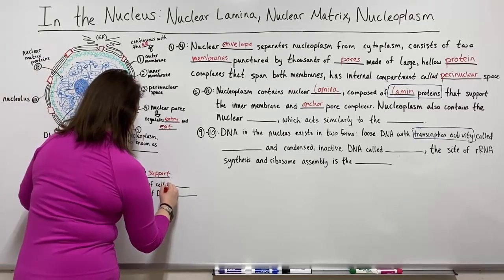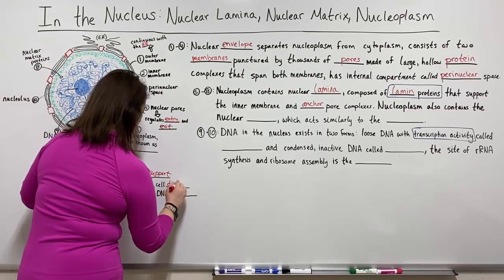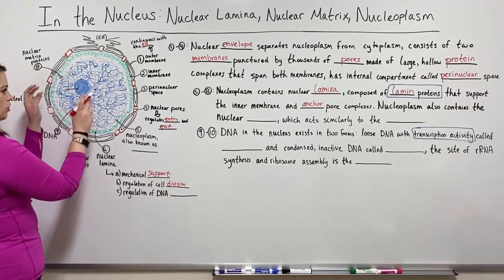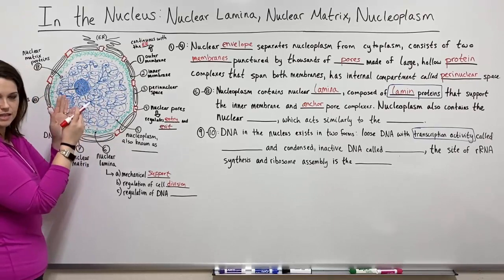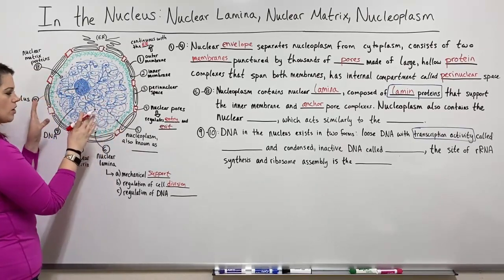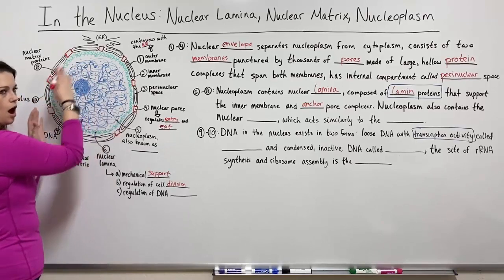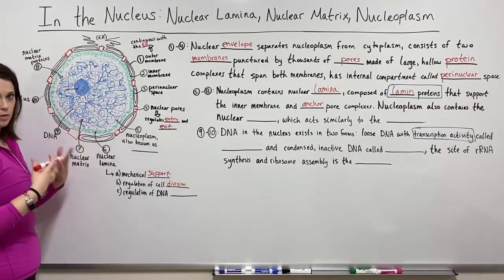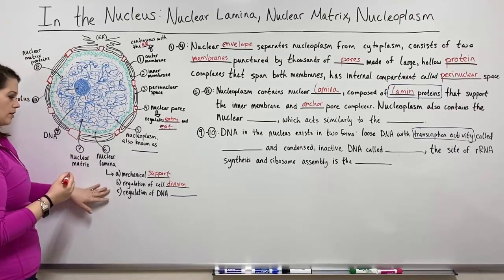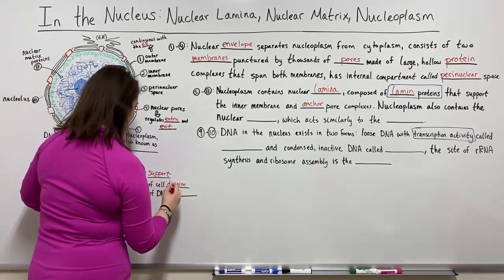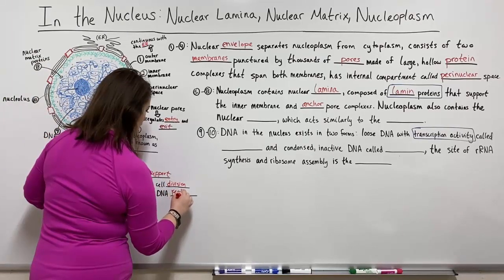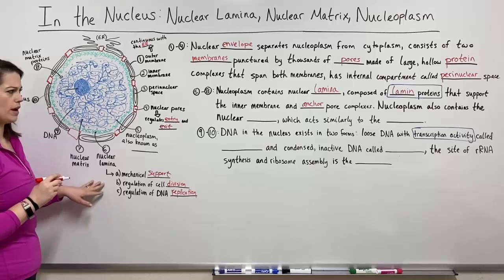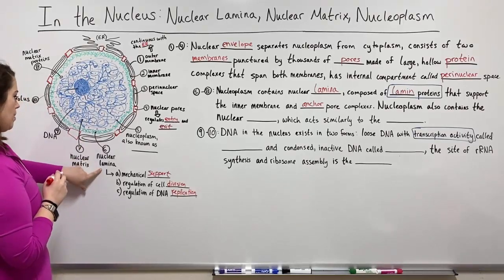The nuclear lamina helps to regulate cell division. During mitosis, the chromatin condenses into chromosomes, they have to be separated, and the nuclear envelope has to dissolve for that to happen and then reform later — the nuclear lamina helps with that process. The nuclear lamina also regulates DNA replication. So it's not just a supportive function; it also has these important regulatory functions.